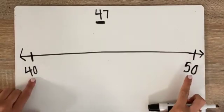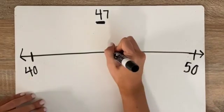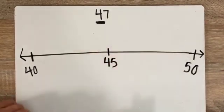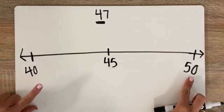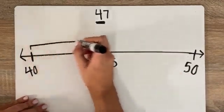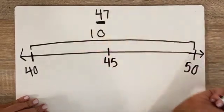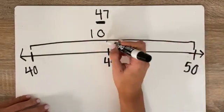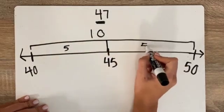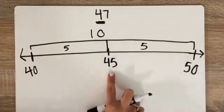Halfway in between is 45. I know that because the difference between these two — this space right here — is worth 10. And if we split it in half, that's five and five. So 40, 50, and 45 is the middle.